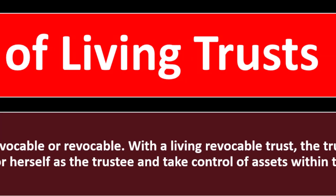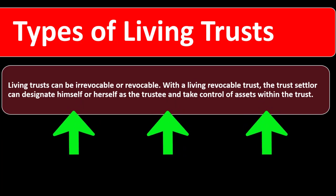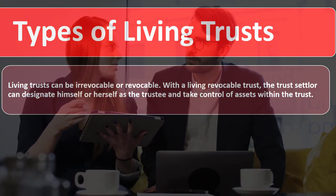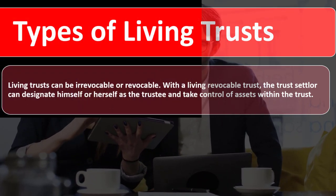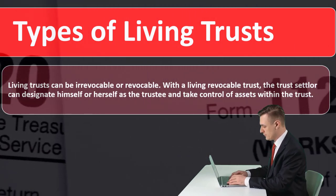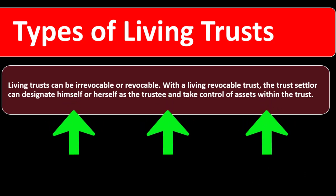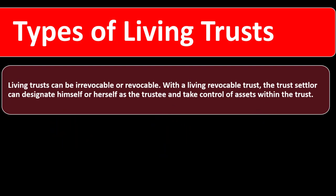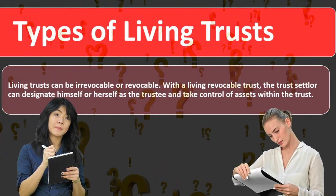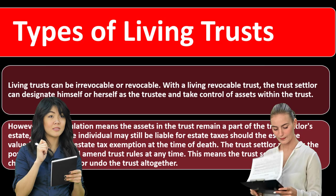Living trusts can be irrevocable or revocable. With a revocable living trust, the trust settler can designate himself or herself as the trustee and retain control of assets within the trust. However, from an estate planning perspective, if the government is going to tax your estate, setting up a revocable trust may not help — because if you still control the assets, the courts may determine you still own them and tax you accordingly.